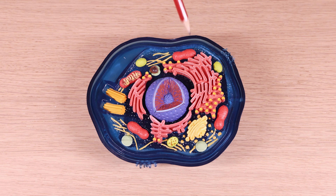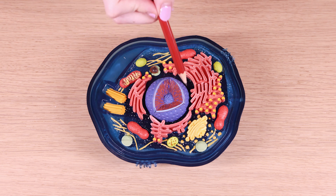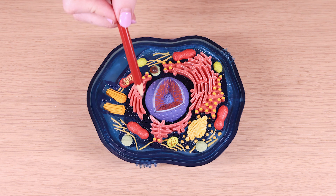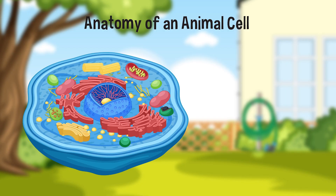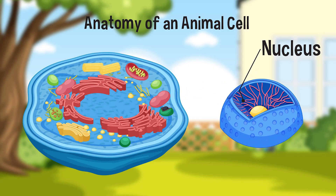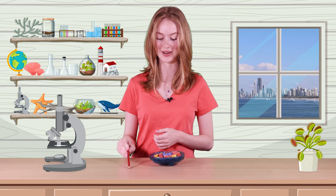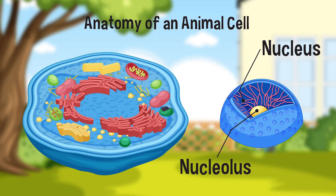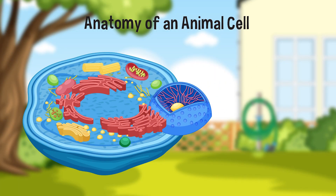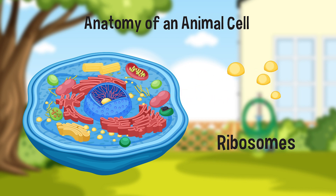Moving on, we have the nucleus, which is the control centre of the cell. It contains the cell's DNA and controls cell growth and reproduction. Within the nucleus, we have the nucleolus, which is the structure responsible for the production of ribosomes. Ribosomes are the cell's protein factories and are essential for cell growth and repair.